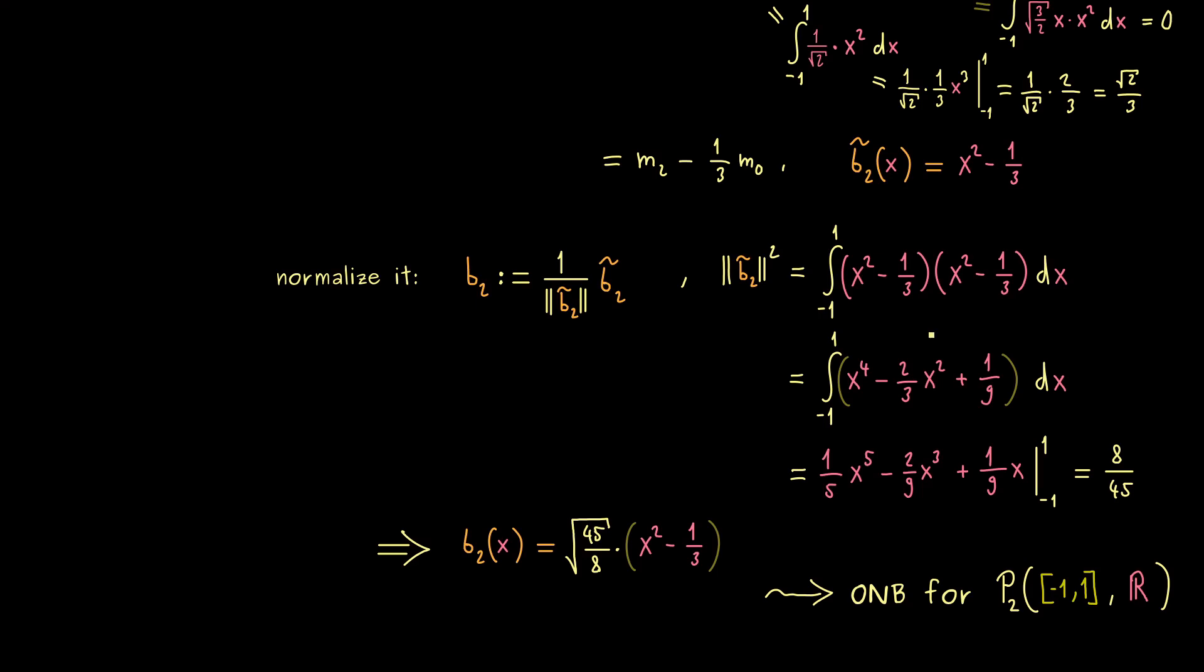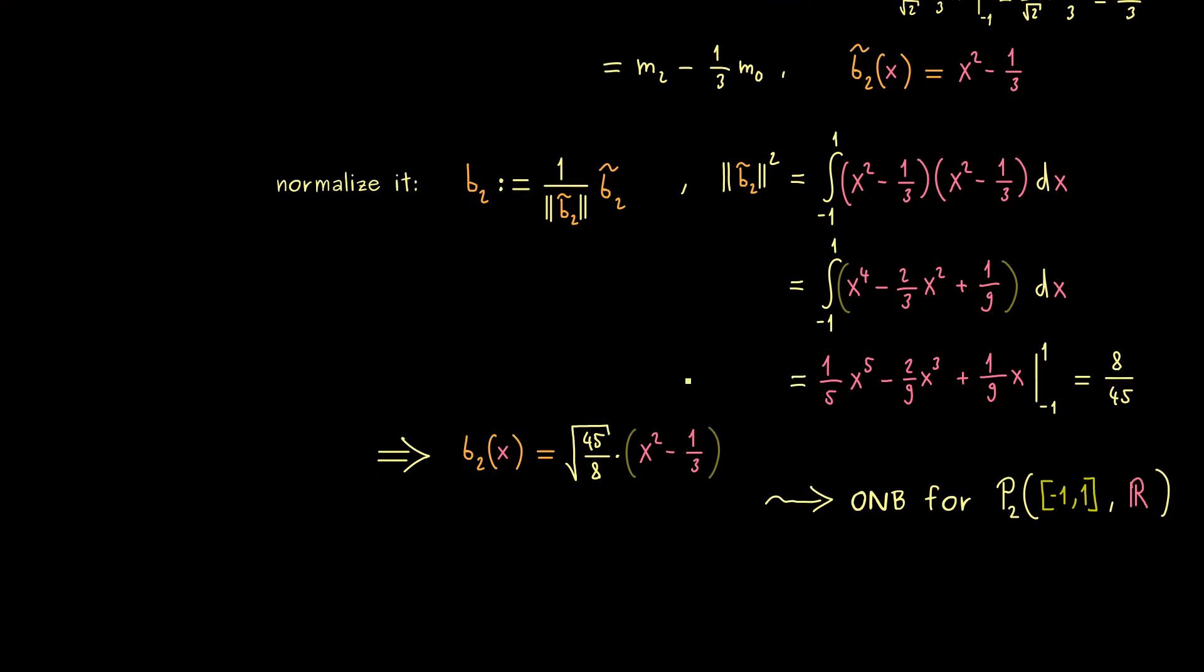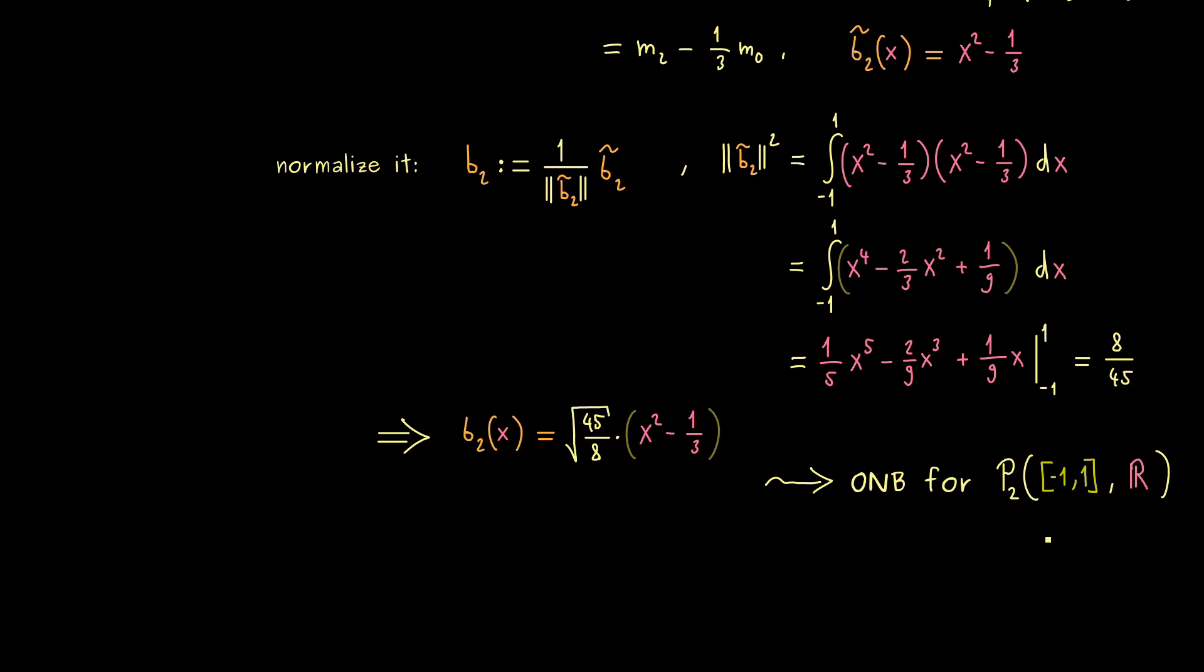However, you see we can just extend the whole procedure to find an ONB for Pn. And there I can tell you, the polynomials that come out there, maybe with other normalization factors, are called Legendre polynomials. They are helpful exactly because they form an ONB in this abstract function space. So with these Legendre polynomials it's possible to do orthogonal projections and so on. But I think this is something for another video. I really hope we meet again and have a nice day. Bye bye.